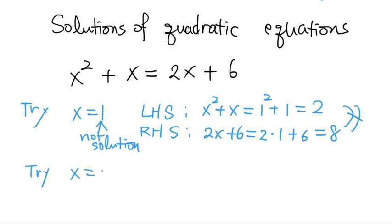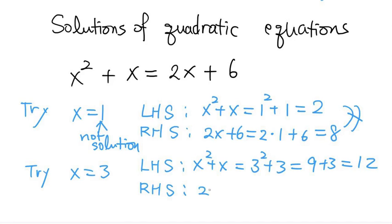Let's try another value. What if x equals 3? What is the left-hand side then? The left-hand side is x squared plus x. So if x equals 3, this is 3 squared plus 3, which is 9 plus 3, which is 12. And the right-hand side we have 2x plus 6. If you replace x with 3, we have 2 times 3 plus 6, and that's 6 plus 6 or 12. Now these two values are equal. So for this value of x, 3, the left-hand side and the right-hand side are equal to each other. Then this is called the solution.